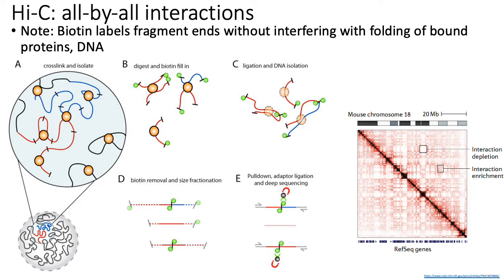But after digestion, what you do is you add biotin to the ends of your fragments. Biotin is a small vitamin that is popular for labeling both DNA and proteins because biotin doesn't really interact with protein or DNA. It has a really high affinity for another molecule called streptavidin, which basically means it's easy to isolate biotin-labeled molecules.